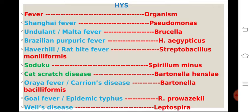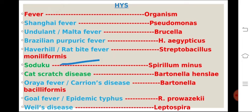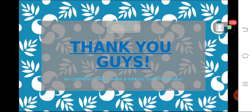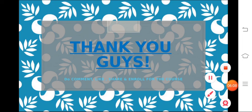The third important slide covers disease-organism associations — already four questions have been asked from this in NEET-PG. The four previously asked associations are: Oroya fever or Carrion's disease caused by Bartonella bacilliformis; Goat fever or Epidemic typhus caused by Rickettsia prowazekii; Weil's disease caused by Leptospira; and Haverhill or Rat-bite fever caused by Streptobacillus moniliformis. Additional important ones: Sodoku is caused by Spirillum minus; cat scratch disease is caused by Bartonella henselae; Brazilian purpuric fever by H. aegyptius; Undulant or Malta fever by Brucella; and Shanghai fever by Pseudomonas. These are high-yield volatile facts that need to go into your permanent memory.